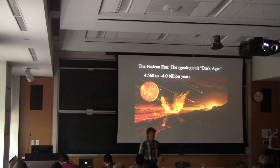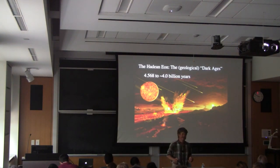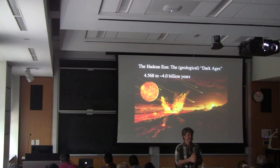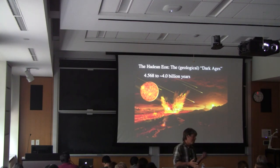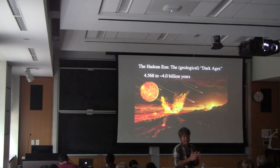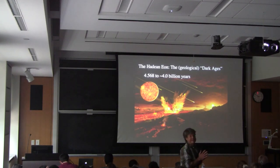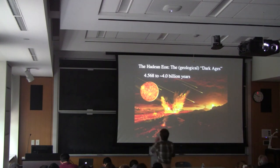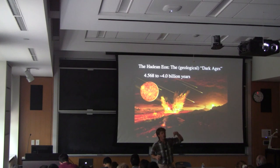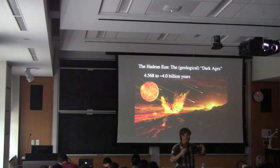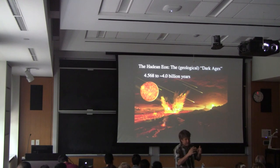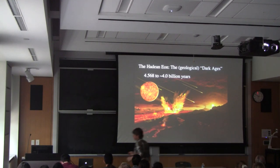The Hadean is sometimes referred to as the geological dark ages — a part of geological time about which we are intensely interested but have very limited ability to learn much. Basically 4.568 to 4 billion years ago. The oldest chunk of crust we've been able to find is just a little bit older than 4 billion years. We don't really have anything left from the Hadean except a couple of zircon mineral grains.